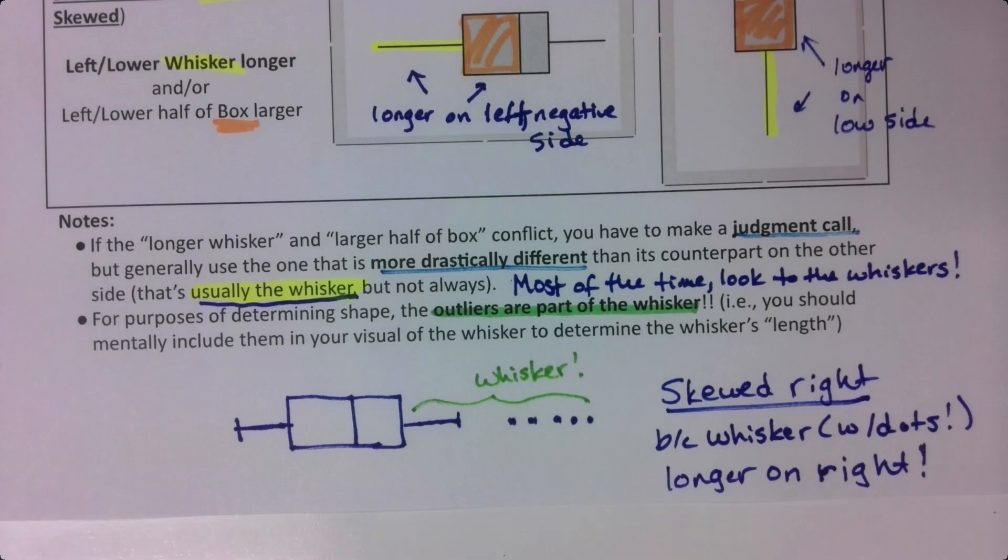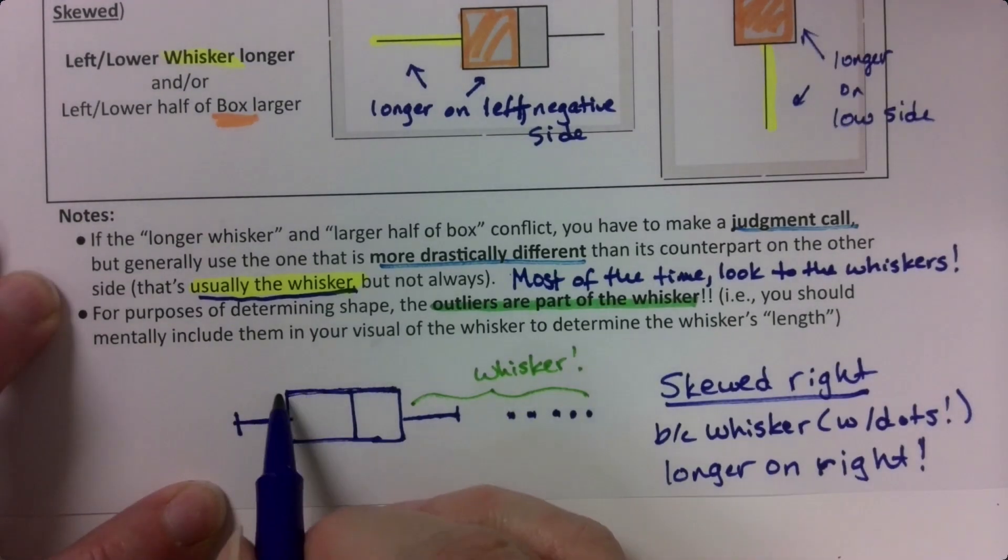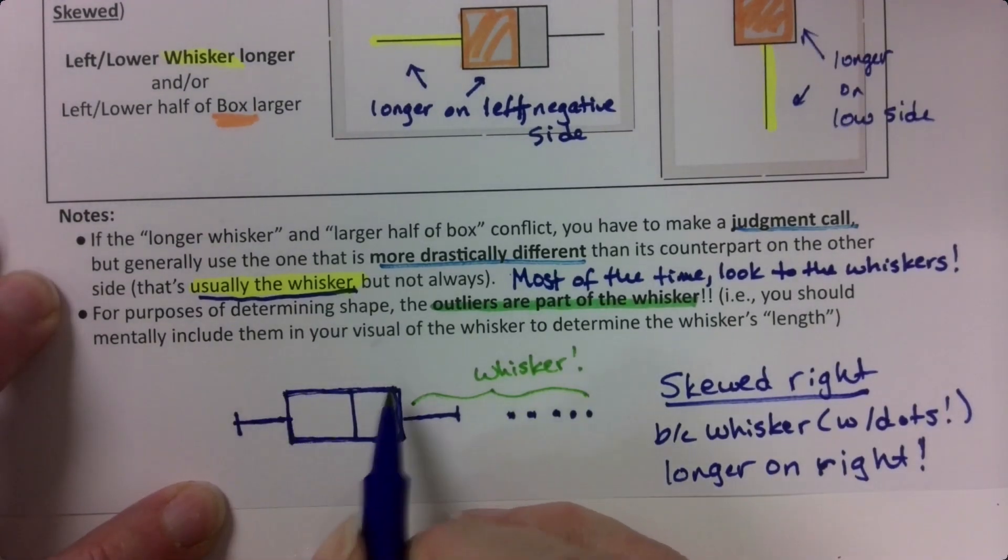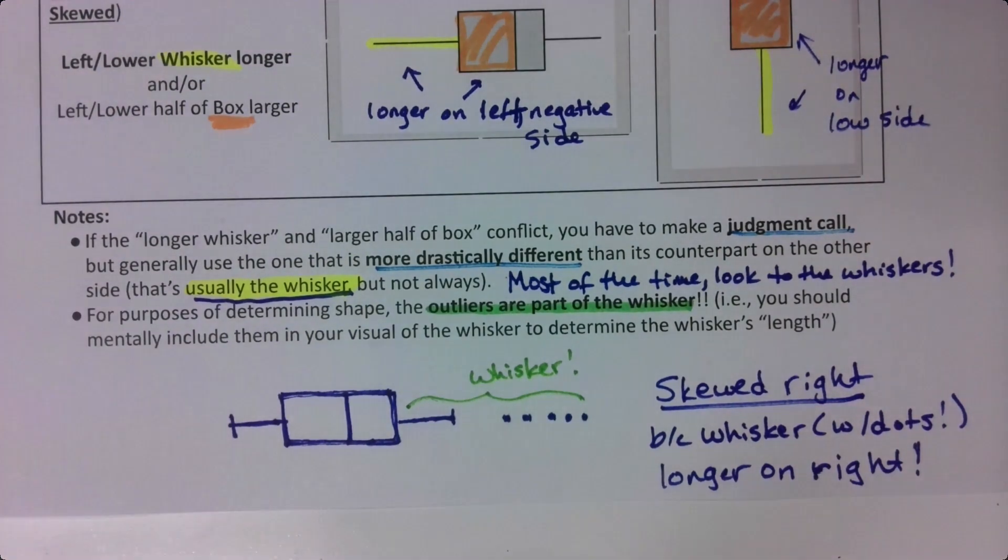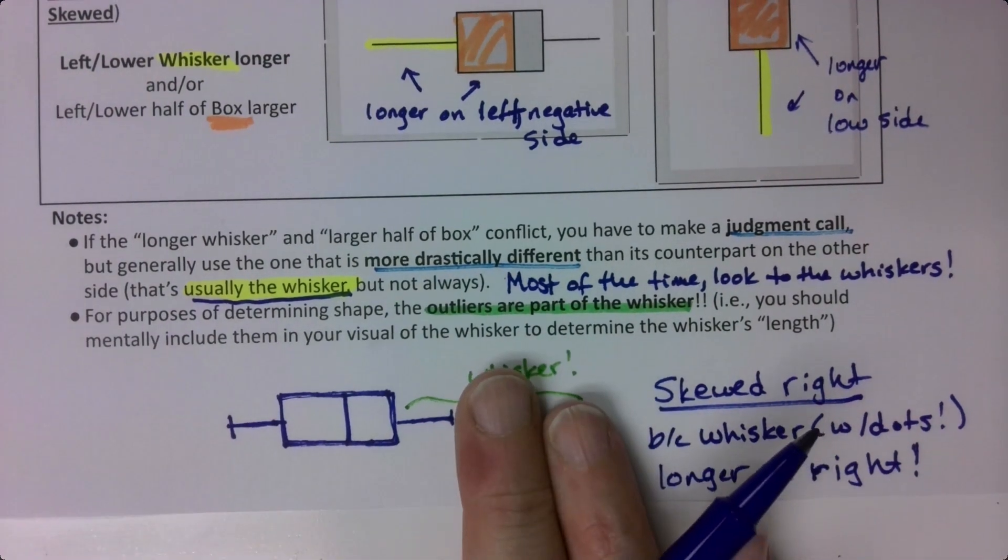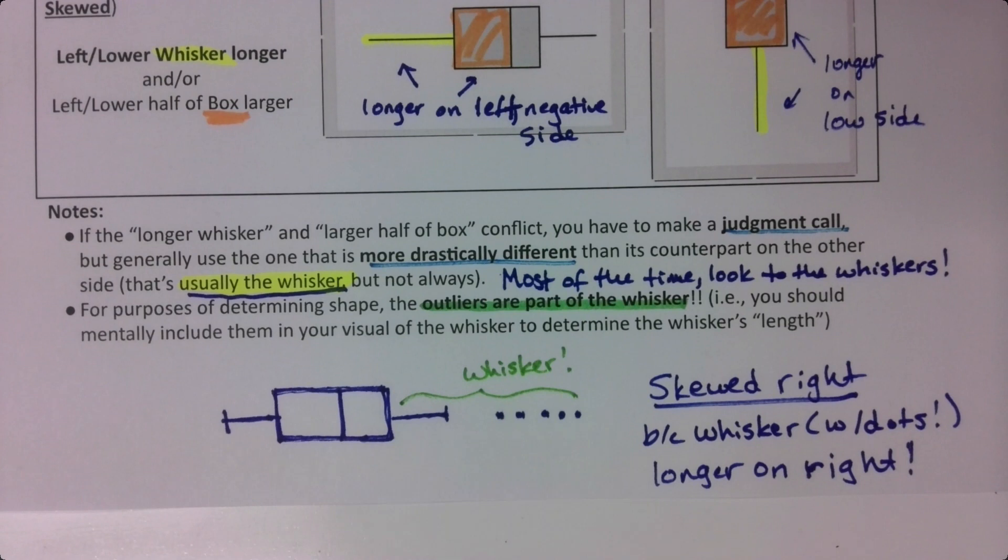Draw that picture. I know it's not the best picture. Try to make it a little bit bigger on the left for the box. But lots of dots over here on the right. If you didn't have the dots, you'd say symmetric. But you do have the dots. And that means it's skewed right.